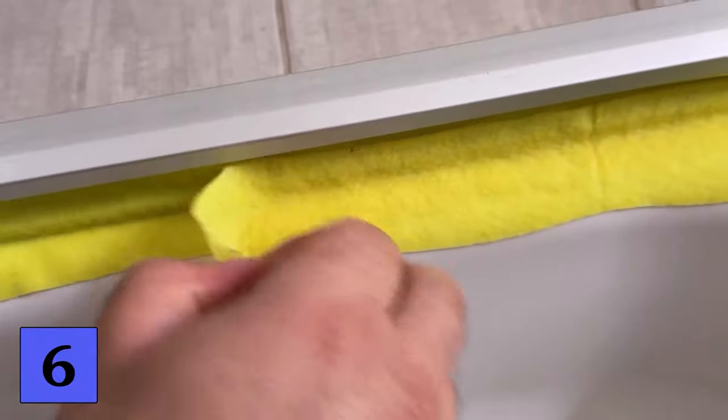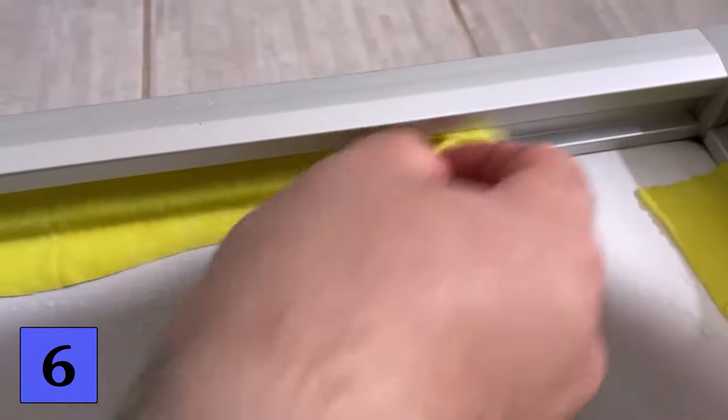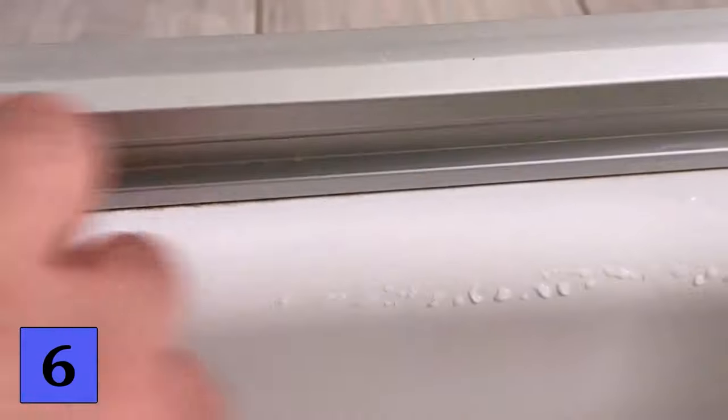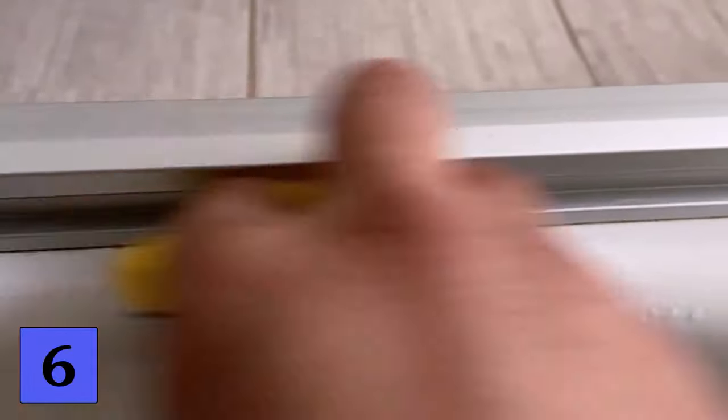When the time is up we just have to remove these things again. And then you can see that most of the limescale and mold has already been removed. Now wipe over it again with a cloth and then rinse it off again. And you can see that everything is really clean again. And we even got the stubbornly calcified area super clean. Thanks to the cloth and the little vinegar.